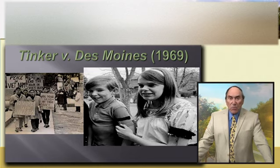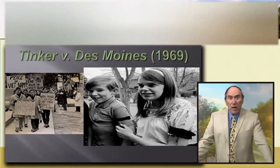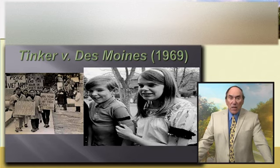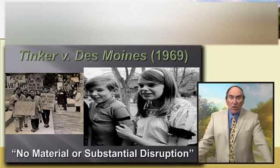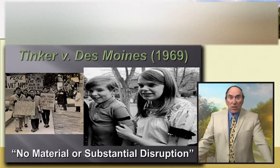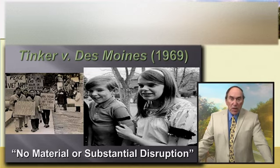U.S. district and circuit courts both sided with the school, ruling that wearing armbands could disrupt learning. However, the students appealed to the Supreme Court. In a 1969 7-2 decision, the judges found that the armbands were basically pure speech and that the school's suspensions were unconstitutional, because the school had not demonstrated that the armbands caused a material and substantial disruption with schoolwork or discipline. As a result of this ruling, substantial disruption became the Tinker standard for future cases.